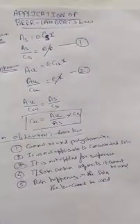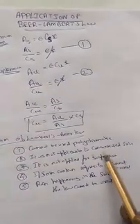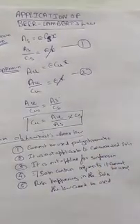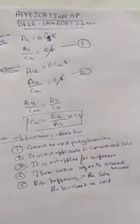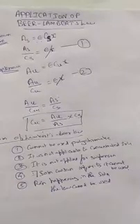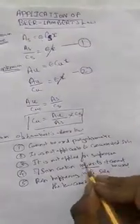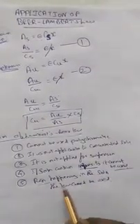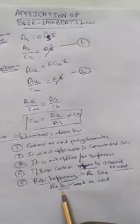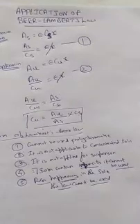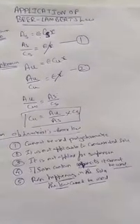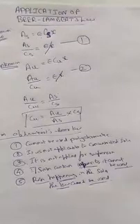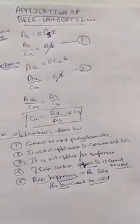In summary, the limitations of Beer-Lambert's law are: it cannot be used for polychromatic light; it is not applicable for concentrated solutions; it cannot be used when suspension is present — the solution must be clear; it cannot be used when impurities are present; and it cannot be used when a chemical reaction is occurring in the solution. We will meet in the next video to talk about the theory of UV-visible spectroscopy. See you then, bye.